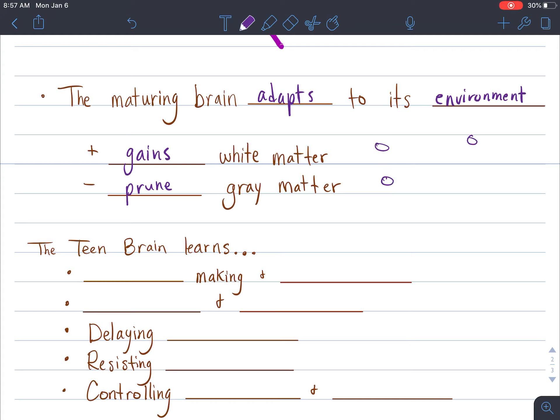The white matter is that connection between the neurons and the gray matter is the actual neuron. So if I were to draw a picture here of some different neuron cells, if I only use a few of these different connections, if my environment causes me to continue to use these connections...